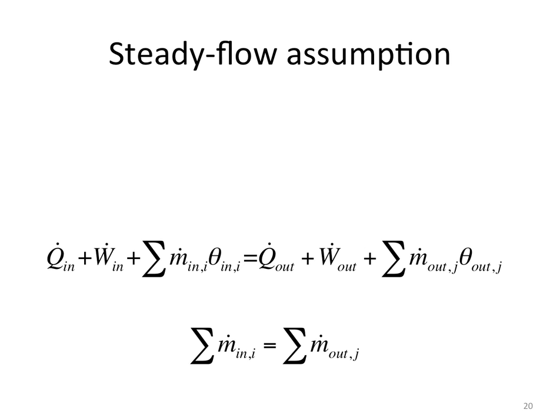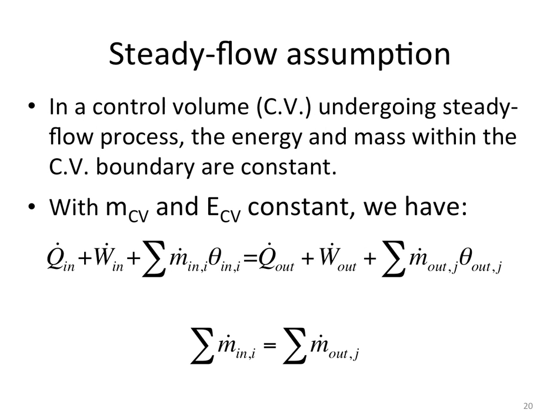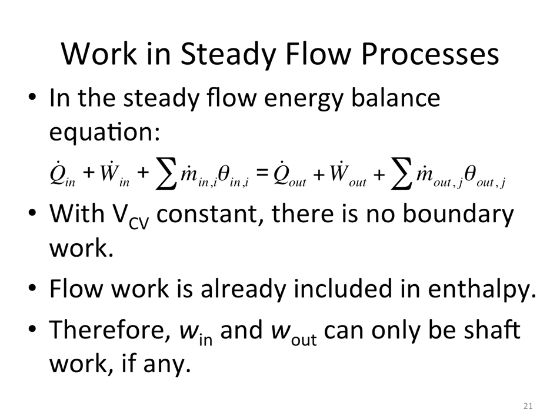As a result, we have two equations necessary for energy conservation analysis of a control volume: the first is about energy and the second is about mass. In the steady flow process, one thing to highlight is that the work is only shaft work — not moving boundary work — because in a steady flow process the volume of the control volume does not change, so moving boundary work is zero.